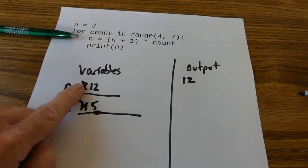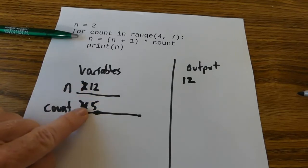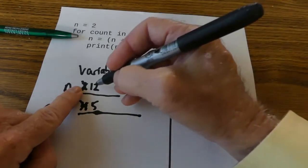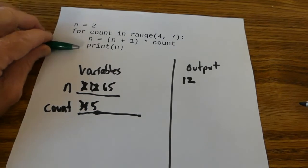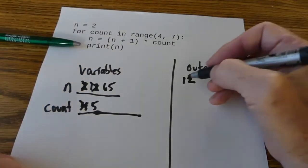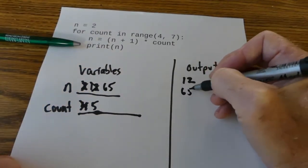n is now 12. 12 plus 1 is 13. 13 times 5 is 65 and that goes back into n. So I get a 65 and I print n which will be output of 65.